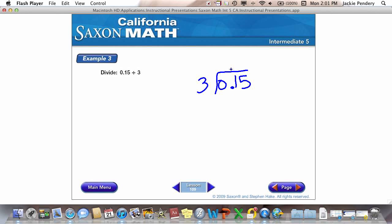So, I move my decimal straight up. And now 3 does not go into 0. 3 doesn't go into 1. 3 does go into 15. And 3 goes into 15, 5 times. 5 times 3 is 15. And I'm finished.